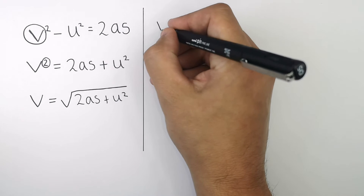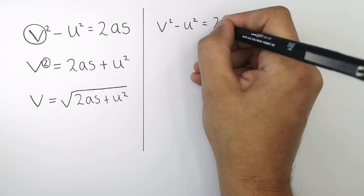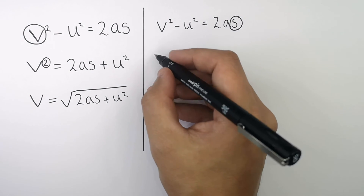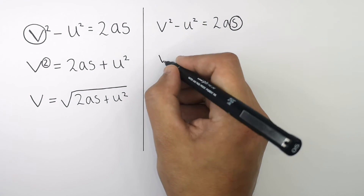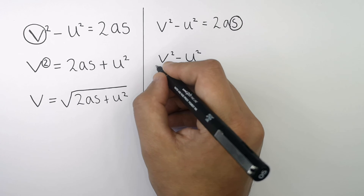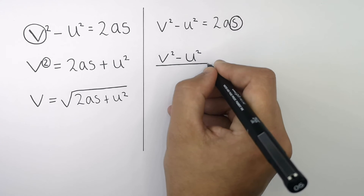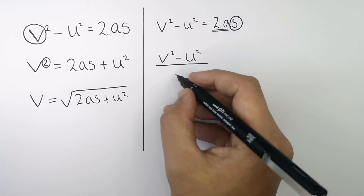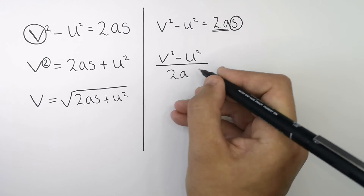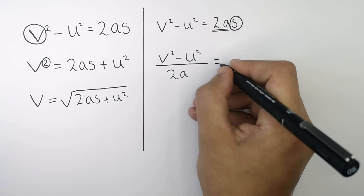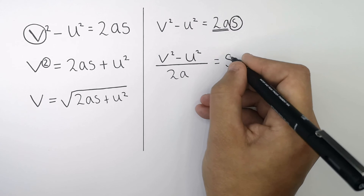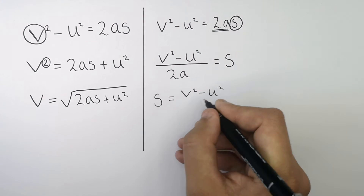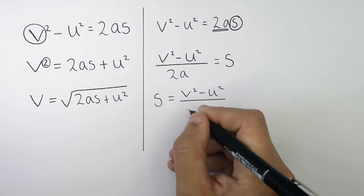So now we want to rearrange V-squared minus U-squared equals 2AS for displacement S. To do that, you do V-squared minus U-squared divided by 2A. That will leave you with S by itself as the subject: S equals V-squared minus U-squared divided by 2A.